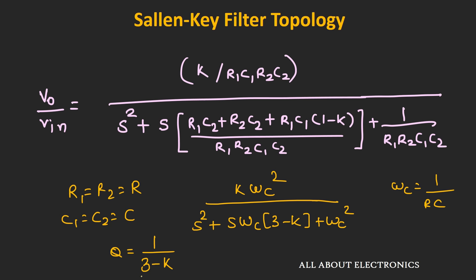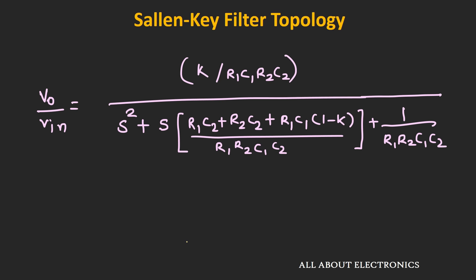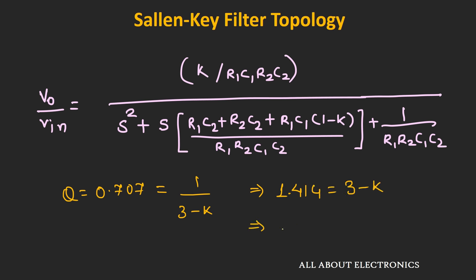The main limitation of this design is that you cannot have a gain greater than 3, because as the gain approaches 3, the quality factor Q approaches infinity and the system becomes unstable. So for this design, K must always be less than 3. For the Butterworth filter design, Q must equal 0.707, so we set 0.707 = 1/(3−K), giving 1.414 = 3−K, and therefore K = 1.586.